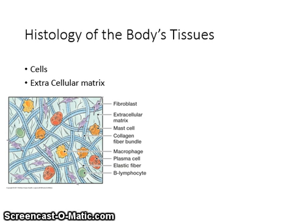A gel-like substance containing interwoven protein fibers surrounds most cells. This extracellular matrix is composed of tissue fluid, protein fibers, and ground substance. Its function is to hold the cells and tissues together and regulate the transportation of nutrients, electrolytes, and water in the tissues.